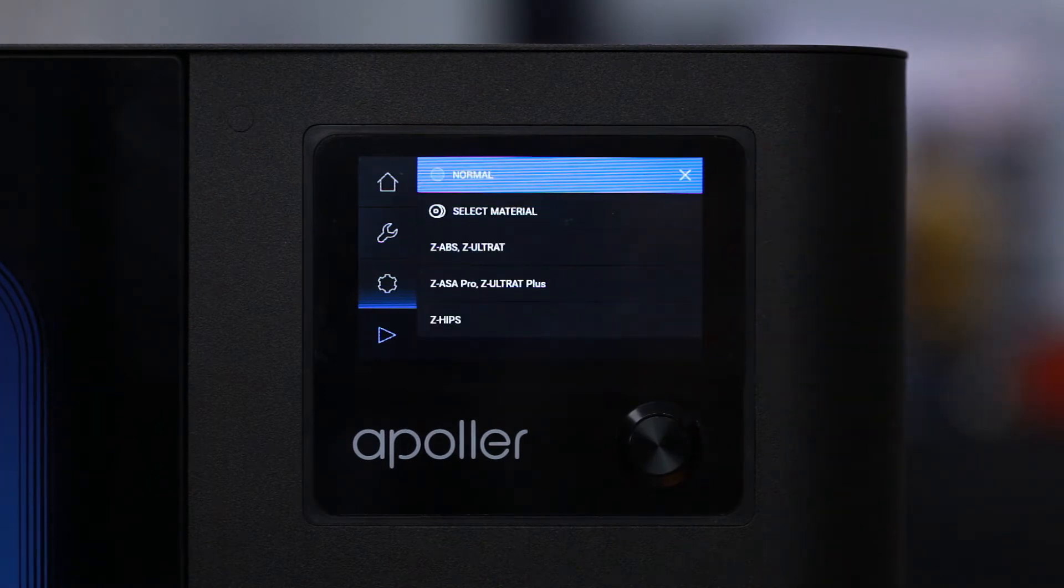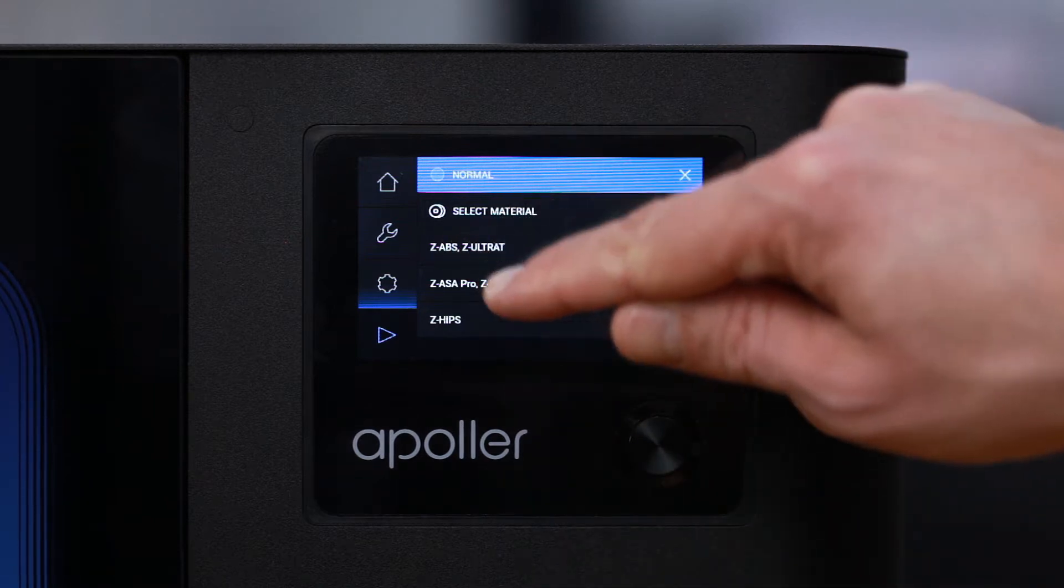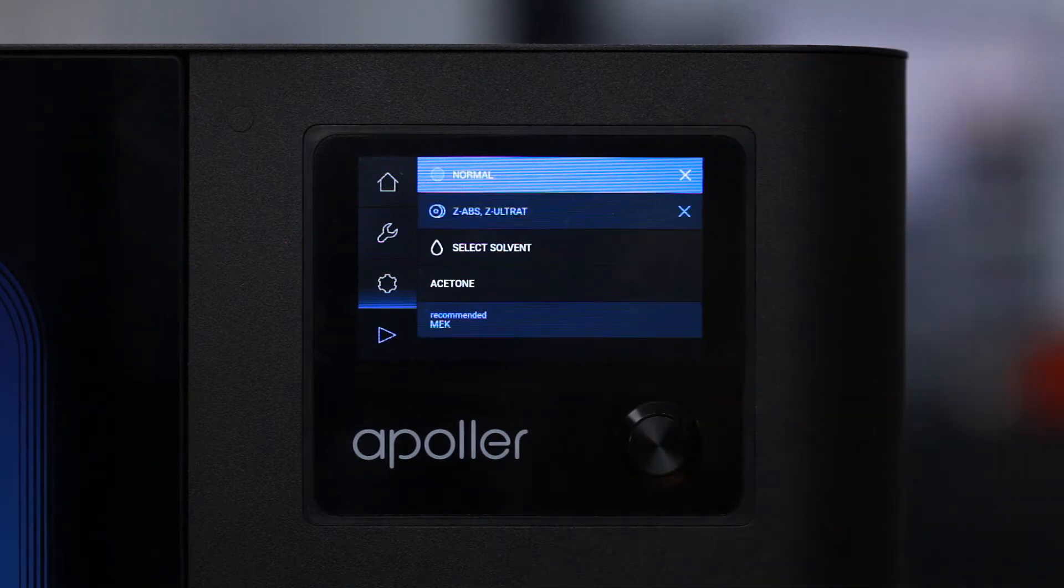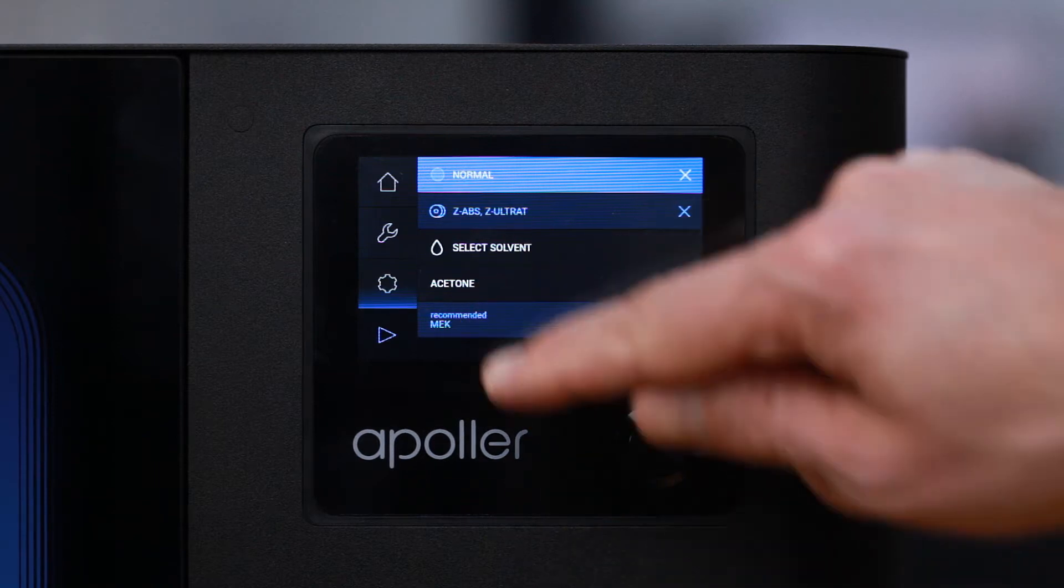In the next step, you have to choose the material type which has been used to print the model. Then select the solvent type which is going to be used for smoothing, either acetone or MEK, depending on the material used for printing. The device will mark the solvent type recommended for the previously selected material.